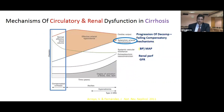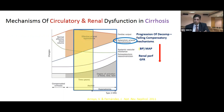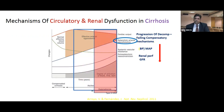To start with, compensated cirrhotics have an effective arterial blood volume. But with progression of cirrhosis, there is splanchnic arterial vasodilatation that keeps on worsening. Initially, compensatory mechanisms like activation of the renin-angiotensin-aldosterone system, sympathetic nervous system, and ADH increase cardiac output to maintain effective arterial volume. But with progression of decompensation, these compensatory mechanisms fail, leading to decreased MAP, decreased renal perfusion, decreased GFR, worsening ascites, dilutional hypervolemic hyponatremia, and type 2 HRS.